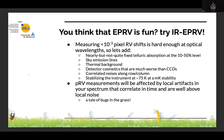Measuring 10 minus 3 pixel motions on your detector is hard enough at optical wavelengths. Add to that the nearly but not quite fixed, changing-in-depth absorption skylines, thermal background, detector cosmetics with funny vertical and horizontal structures, stability problems — it's a lot.